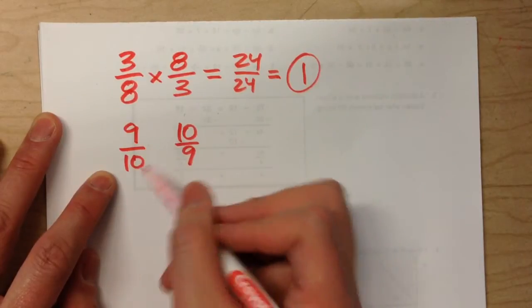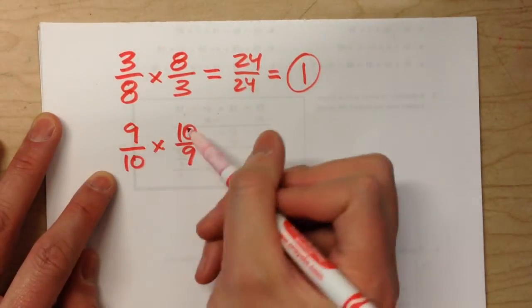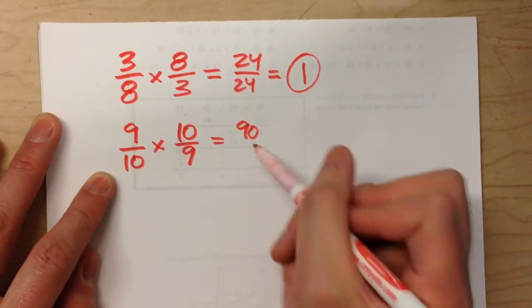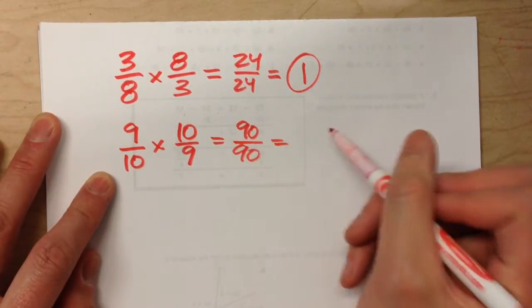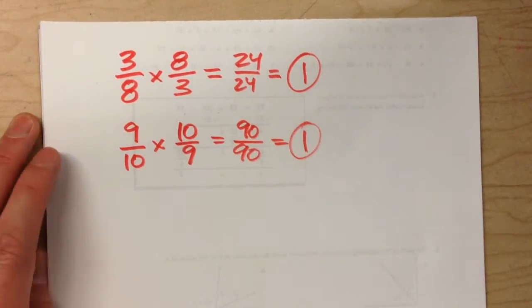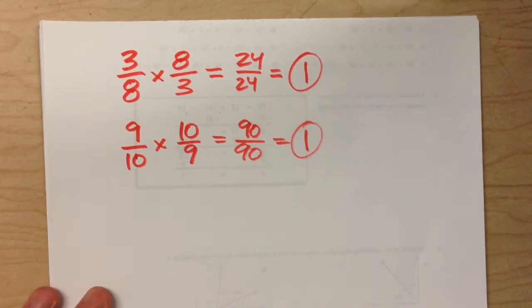And that's true with any fraction and its reciprocal. For example, 9 tenths and 10 ninths: top times top is 90, bottom times bottom is 90 — one whole. We can use that idea to solve algebra equations with fractions.